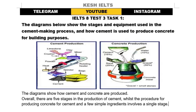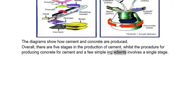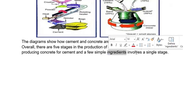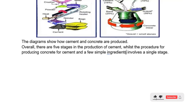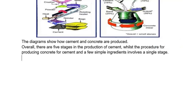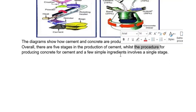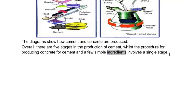Many people can get confused here — 'ingredients' is plural, but 'involves' is singular. They may say it should be plural, but here we are using the third word form because it's about a procedure, not the ingredients themselves. So: 'procedure involves a single stage' is correct.